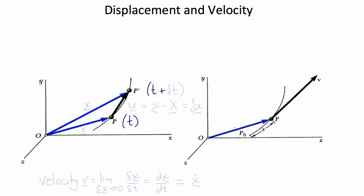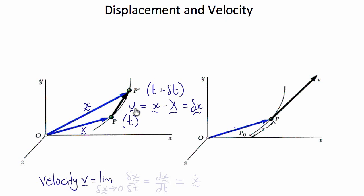Let's start by reviewing position, displacement, and velocity. Point P at time t is moving so that it's at point P' at time t plus delta t. Its position at P is denoted by the position vector capital X, and at time t plus delta t by position vector little x. The displacement vector u is the difference between little x and big X, and for small displacements we'll label this delta x. Therefore the velocity vector v is the limit as delta t tends to zero of delta x over delta t, which is dx/dt or x-dot. The velocity vector is tangent to the arc of the motion at point P at time t.